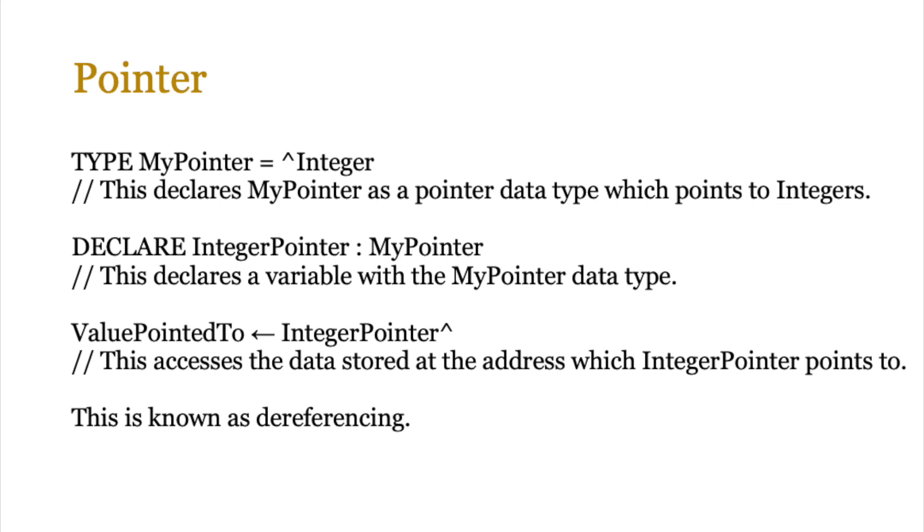So sometimes I also might need to actually access the value that is being pointed to by this pointer. So in this particular case, I will simply have a variable, in this case ValuePointedTo, and I will assign a value that is stored at that IntegerPointer location. And to do that, I just simply assign like a normal assignment arrow and the variable IntegerPointer and the hat symbol appears on the right hand side. This technique is known as dereferencing, which means that do not store the integer pointer, but the value that the integer pointer points to.